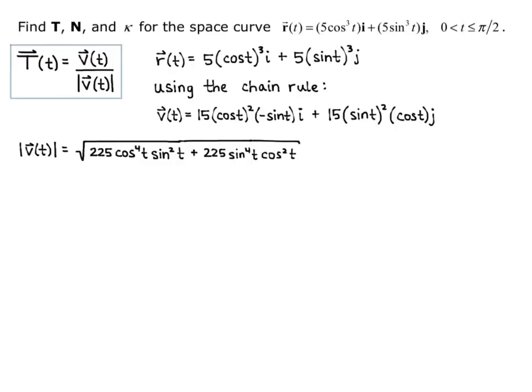Now I want to factor out the common factors. I know they both have a 225, and they both have a cosine squared of t and a sine squared of t. So what's left over from the first term is a cosine squared of t, and from the second term is a sine squared of t.